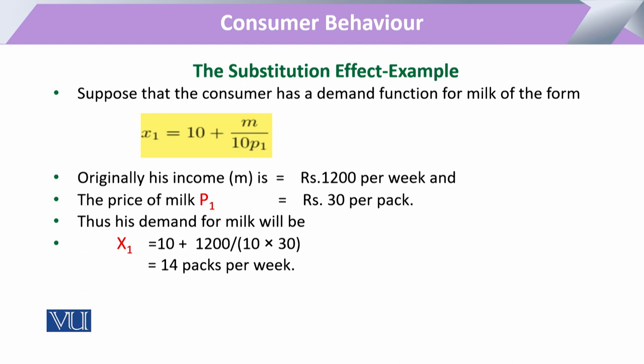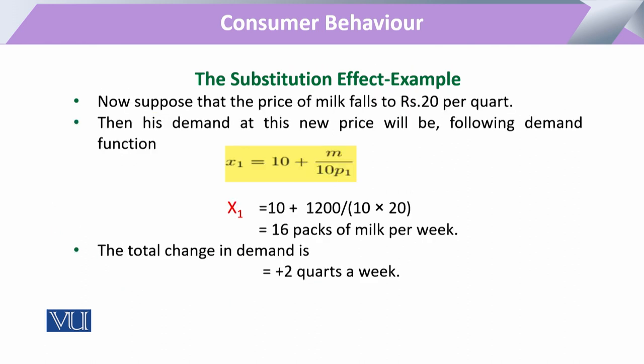Now coming to the example: if the consumer's demand function is given, and the consumer has an initial income of rupees 1200 and an initial price level of 30, then utilizing this, we calculate the consumer's initial demand to be 14 units of the commodity — say, milk. If now the price of the commodity decreases to rupees 20, we can then calculate the consumer's new demand.